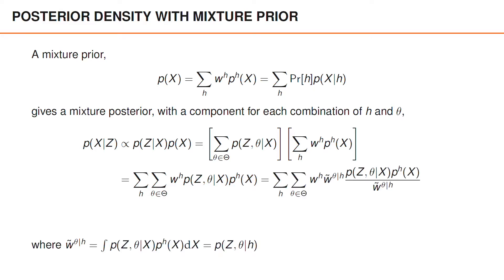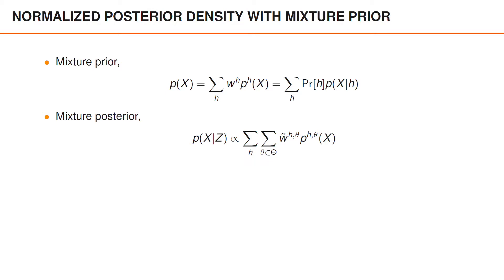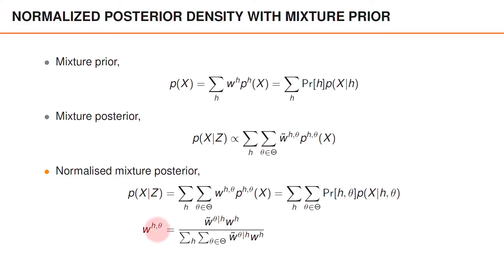Using normalization, we can write this as an unnormalized mixture density, where each mixture component is conditioned on a prior hypothesis H and a data association theta. So if we have a mixture prior, then we get a mixture posterior. We normalize this by dividing the unnormalized weights by the sum of weights, giving us a normalized mixture posterior where the mixture weight is the probability of the combination of this prior hypothesis and the data association.